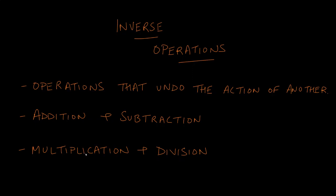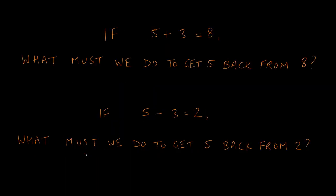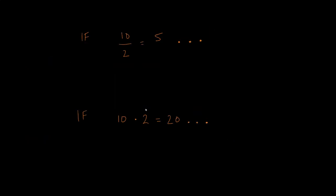Multiplication can be undone by dividing, and division of two terms can be undone by multiplying those terms together. For example, if we add three to five to get eight, we need to subtract three from eight to get five back. Similarly, if five minus three equals two, we add three back to two to return to five.